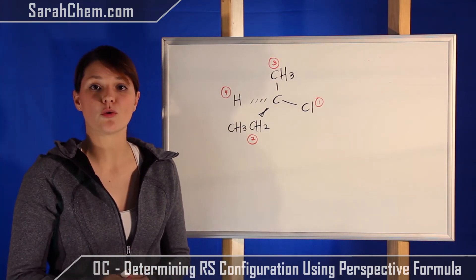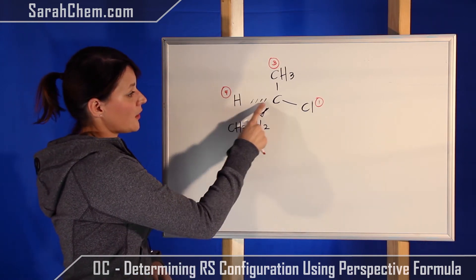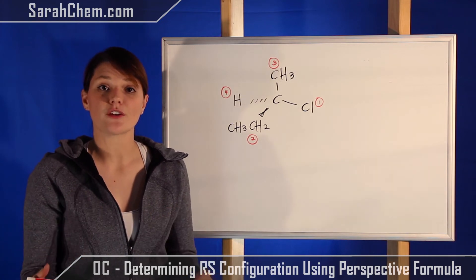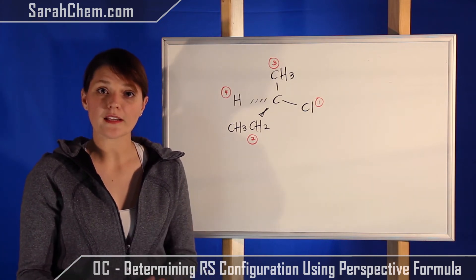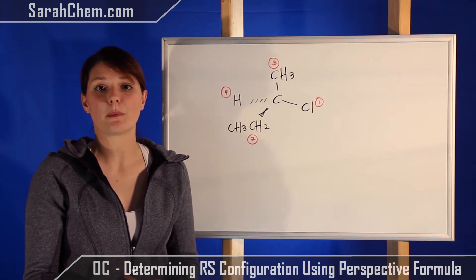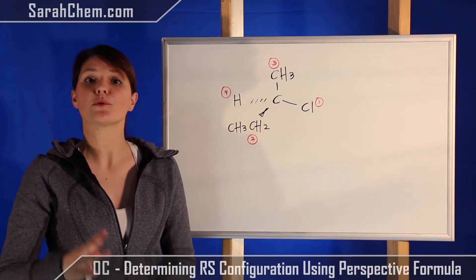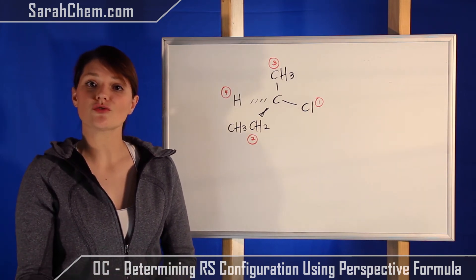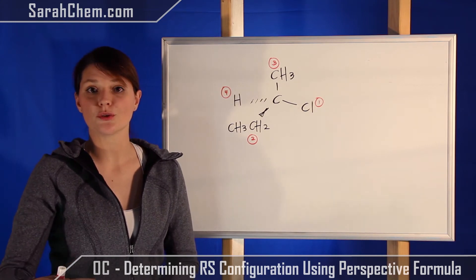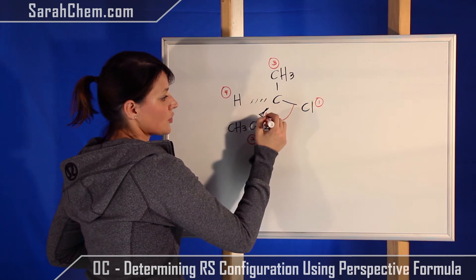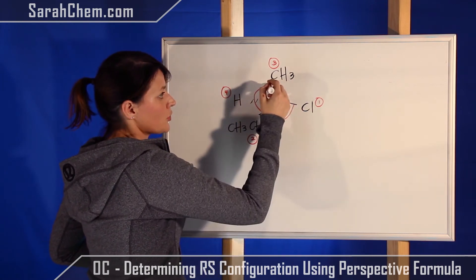The next thing you need to make sure is that your fourth priority is on the hatched wedge. In this case it is, so this is a very straightforward example. We will look at a case where it is not and see how you could possibly deal with that. But because in this case it is, we're good—we can move on to step three, which is to draw a curved arrow from one to two and two to three. So I'd start with one. One goes to two, and now I'm going to go from two to three.